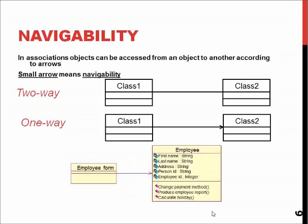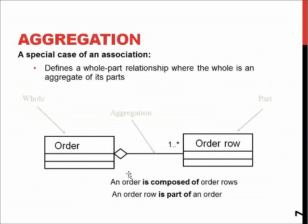In this example, it means that the employee form will have the information of the employee, but the employee does not have access to the employee form. So in component design, you should not rely on this object having any data or activity from that other object, because it simply cannot access it.